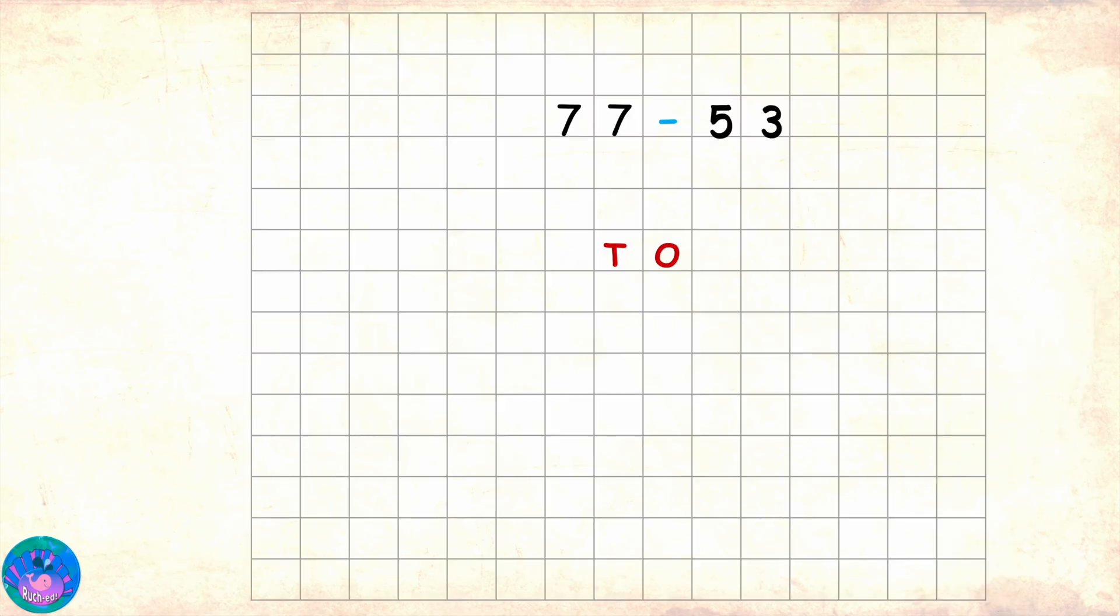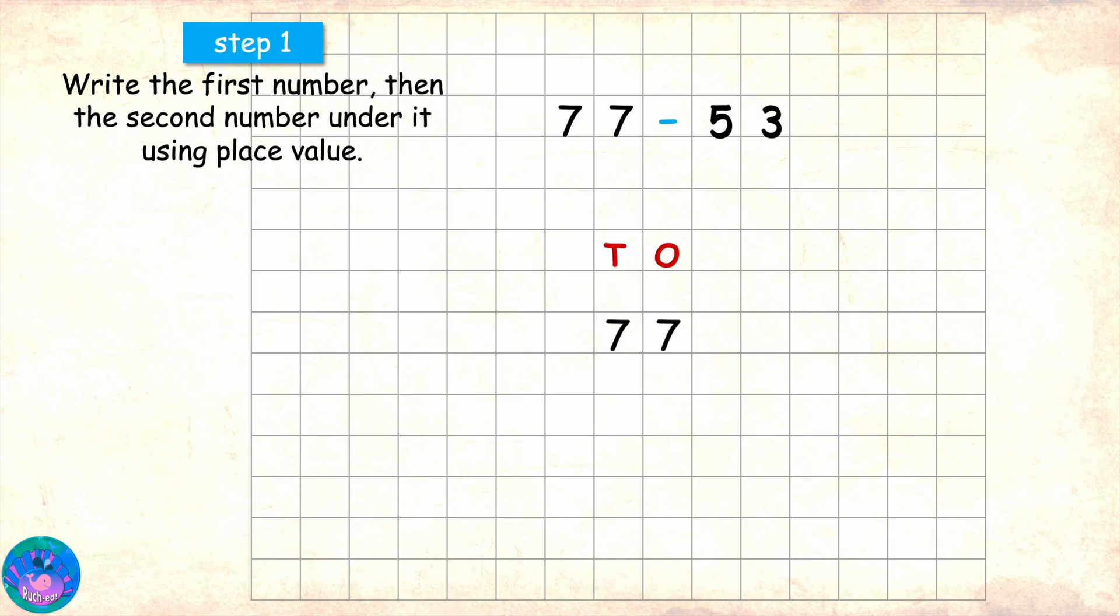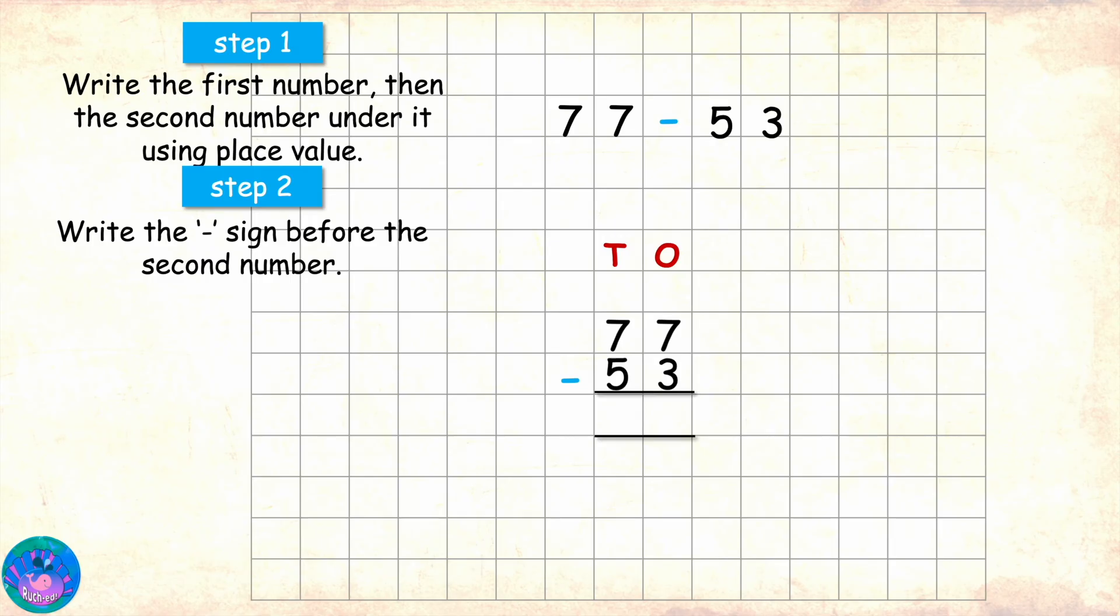If we have to solve 77 minus 53, step 1 would be to write the first number 77 and we write the second number 53 in this case under it. Step 2 is to write the minus sign which is the symbol of subtraction before the second number and mark the area for answer.